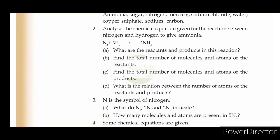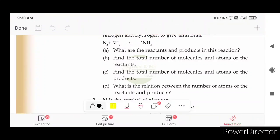We are going to analyze the chemical equation given for the reaction between Nitrogen and Hydrogen to give Ammonia. We are going to talk about the chemical equation. What are the reactants and products in this reaction? The reactants are Nitrogen and Hydrogen.